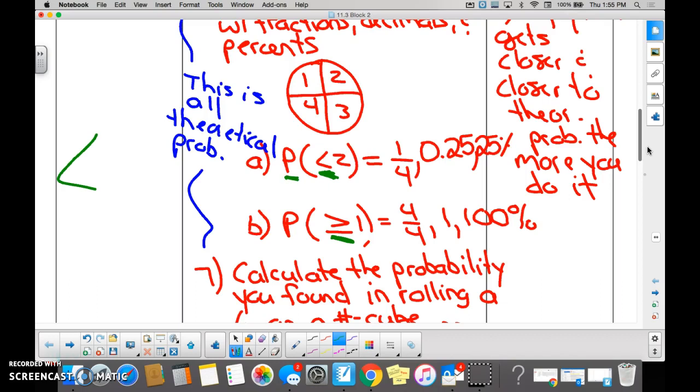So we're asking for the probability of getting something less than 2 on this spinner. How many things can be less than 2? One. What is that thing? One. So the probability is 1 out of 4? Yes. Can you convert that to a decimal percent? Yes.